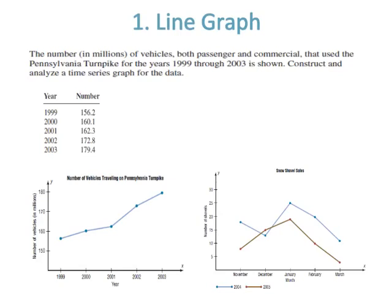Number one is line graph. When you analyze a time series graph, look for a trend or pattern that occurs over the time period. The line graph on the left-hand side shows an upward trend of vehicles from 1999 to 2003. On the right-hand side, two data sets are compared on the same graph, also called a compound time series graph. This graph shows the number of snow shovels sold at a store for two seasons.